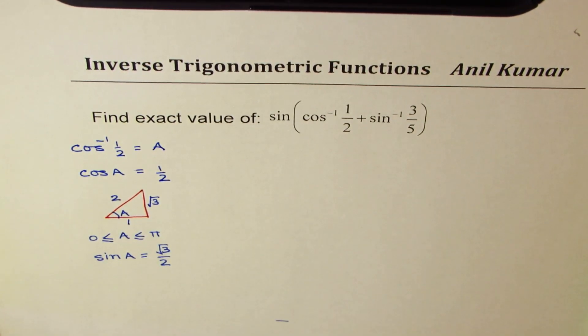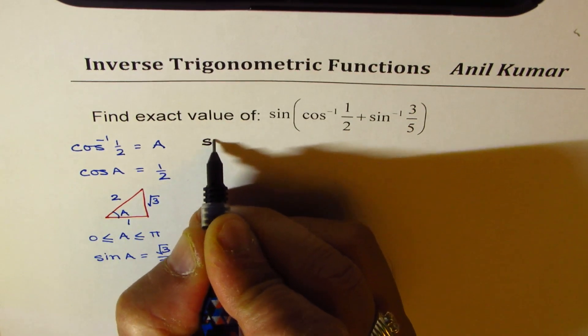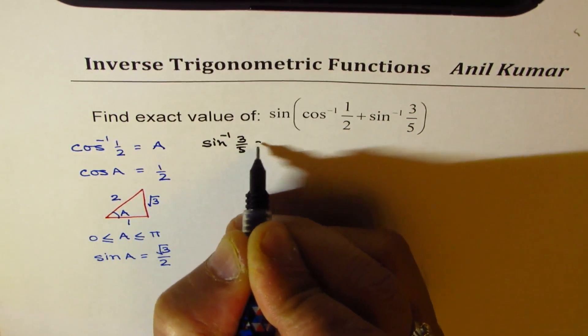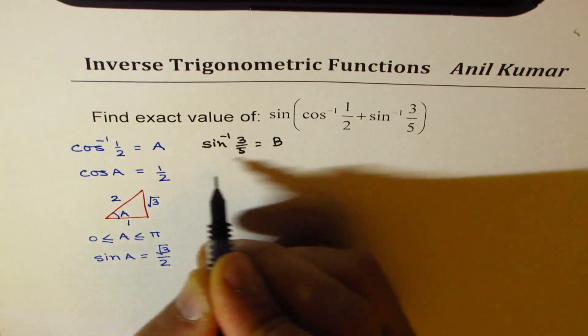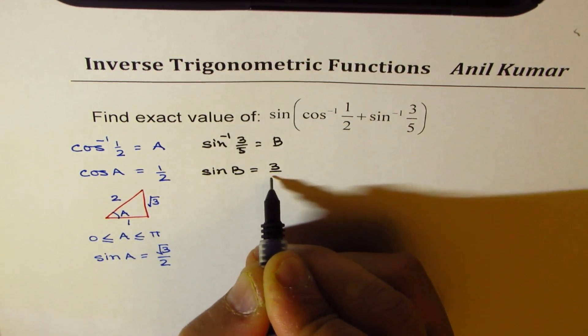Similarly, let us find out the value of the other angle. So when we say sine inverse of 3 over 5, I can write this as equal to B. And in that case, sine B will be equal to 3 over 5.